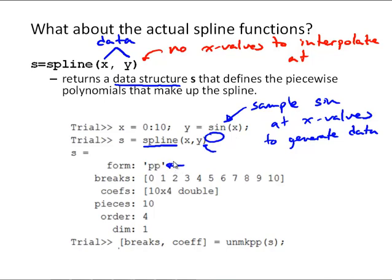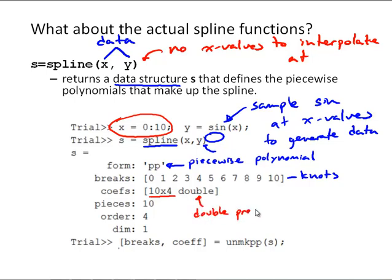The form, this pp stands for piecewise polynomial. And the breaks, these are the knots. Recall that is the values of x, 0 to 10, so those are the breaks. And then coefficients are in a 10 by 4 double, because these are double precision numbers. And so we have 11 data points, so we will have 10 intervals. So we have 10 rows by 4 columns. Just like we would expect, we have 40 spline coefficients.